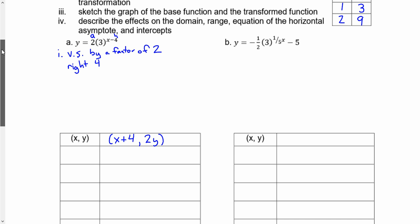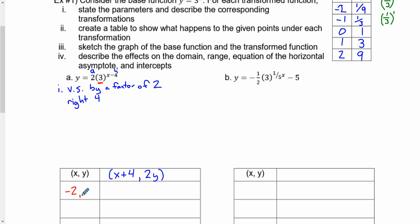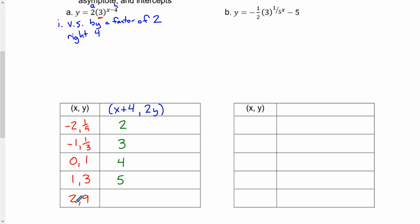The coordinates we'll be transforming are those from the base function: negative 2 with 1 ninth, negative 1 with 1 third, 0 with 1, 1 with 3, and 2 with 9. Transforming the x-coordinates by adding 4: negative 2 plus 4 is 2, negative 1 plus 4 is 3, 0 plus 4 is 4, 1 plus 4 is 5, and 2 plus 4 is 6. All our x-coordinates have been changed.